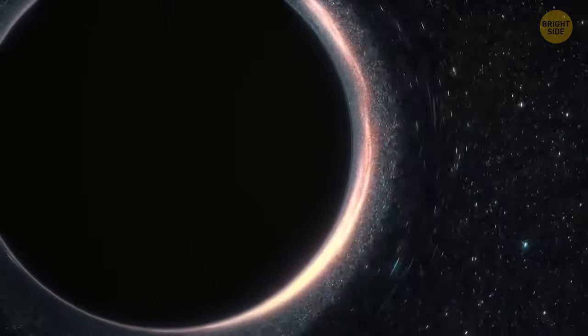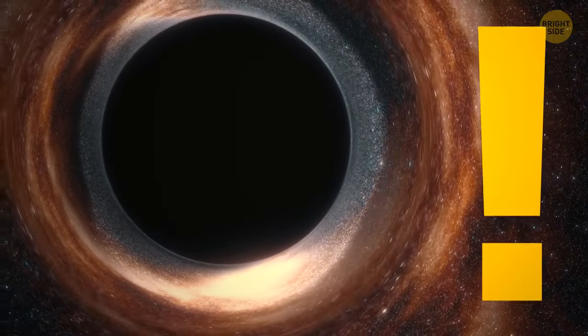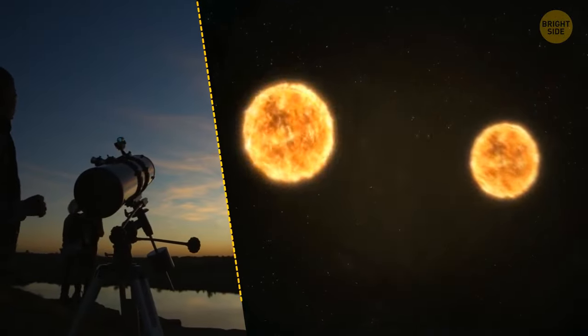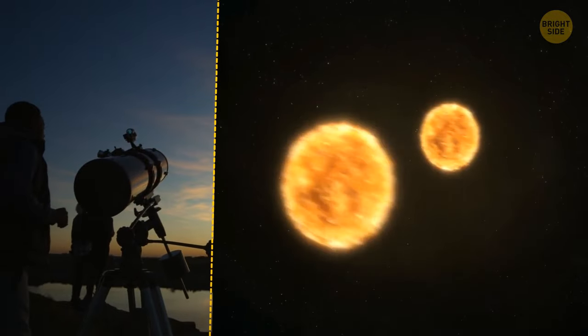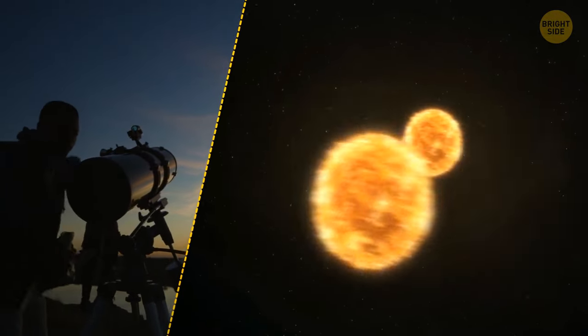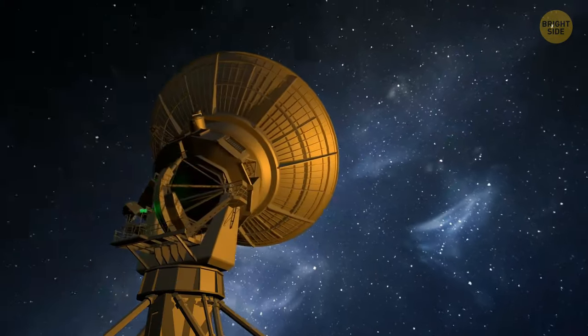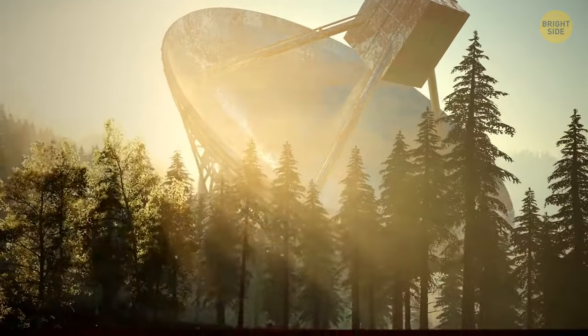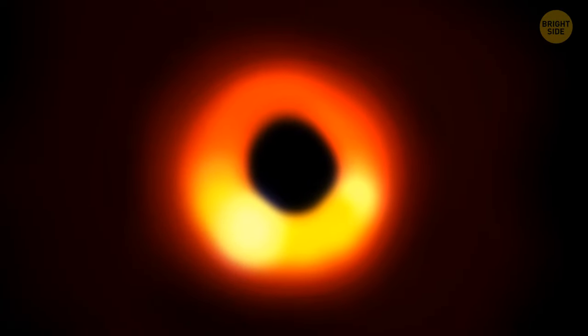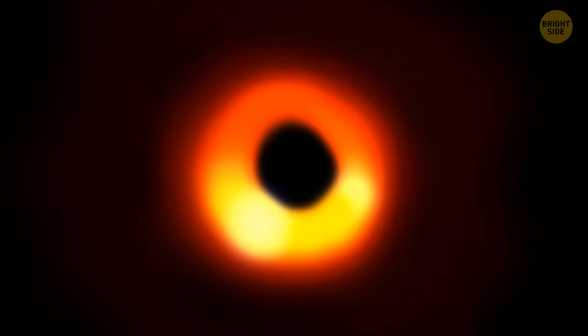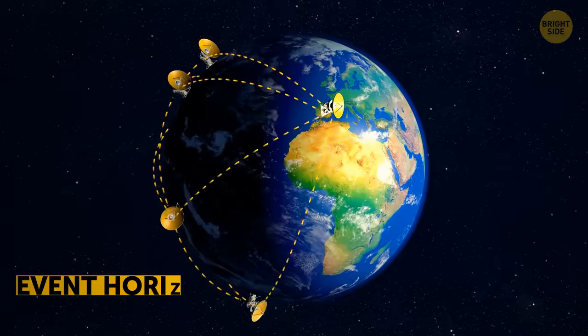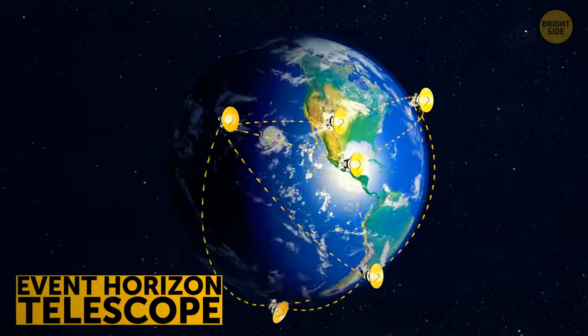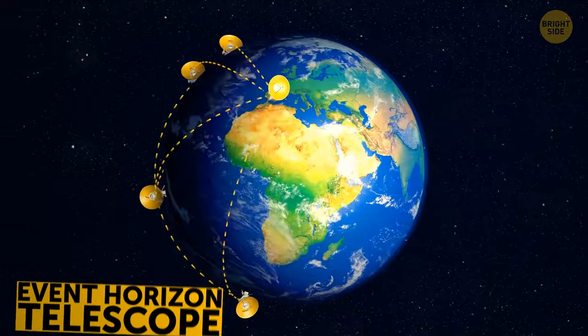You can't see a black hole directly because it doesn't give off any light. Scientists used to be able to only spot them by what they were doing to their surroundings. When over 200 scientists around the world worked together, they managed to take the first pictures of that space oddity. The equipment they used, added together, would be the power of a telescope the size of Earth.